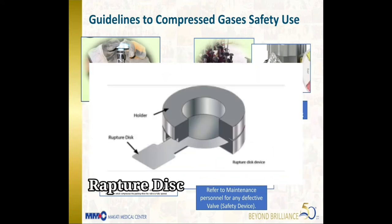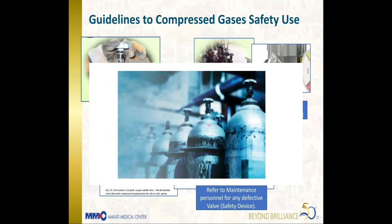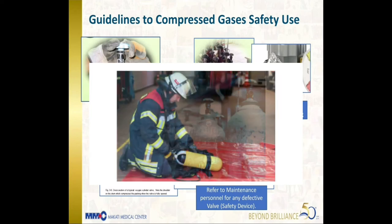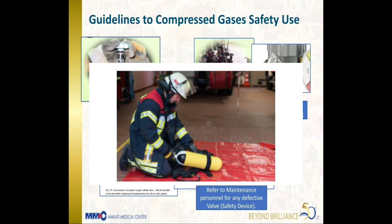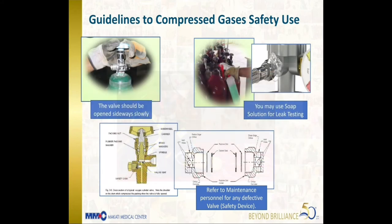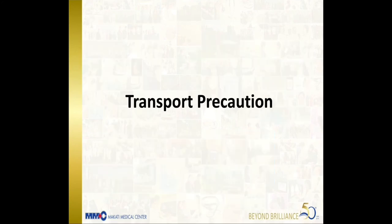Medical gas cylinders are equipped with a safety device called a rupture disc. This will burst or rupture to release gas when the cylinder's test pressure inside is reached. This is to prevent the cylinders from exploding, becoming a projectile, and causing injuries.